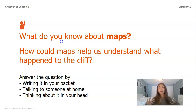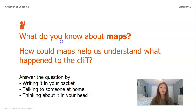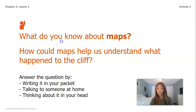Some things I would say: maps can help us see how close the flagpole is to the edge of the cliff. Also, if we looked at an old map of the cliff, it could help us see if the cliff changed from back in the day to now, and if so, by how much.